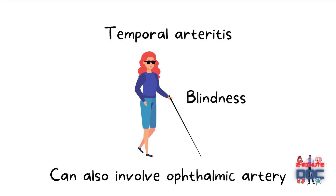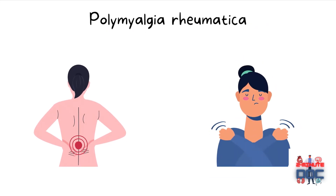Temporal arteritis can also cause blindness in some patients because of involvement of the ophthalmic artery. In many cases, temporal arteritis has been found to be associated with a condition called polymyalgia rheumatica, in which patients will have muscle and joint pain.